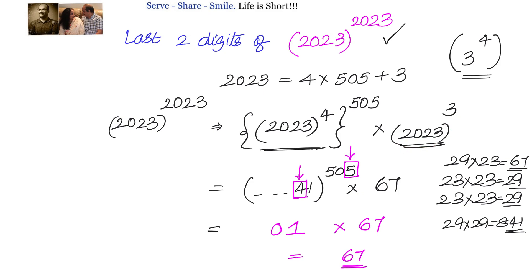The last two digits of 2023^3: 23 × 23 × 23 — first 23 × 23 ends with 29, then 29 × 23 ends with 67. For 41^505, the unit digit is 1 and the tens digit comes from 5 × 4 = 20, unit digit 0, giving 01. Multiplying 01 × 67, the last two digits of 2023^2020 will be 01 and 2023^3 ends with 67, so the final answer is 67.